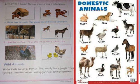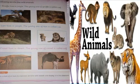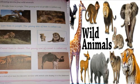Wild animals live away from us. They mostly live in jungles and survive by their own means, like hunting, fishing, or eating vegetables. Giraffe lives in the jungle and the young one of giraffe is called a calf. Lion lives in the jungle and the young one of lion is called a calf. Camel lives in the desert and the young one of camel is called a calf.